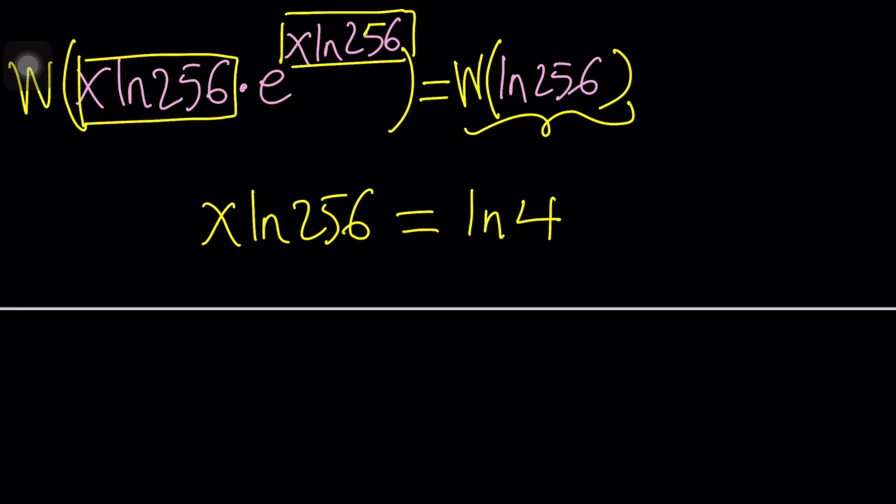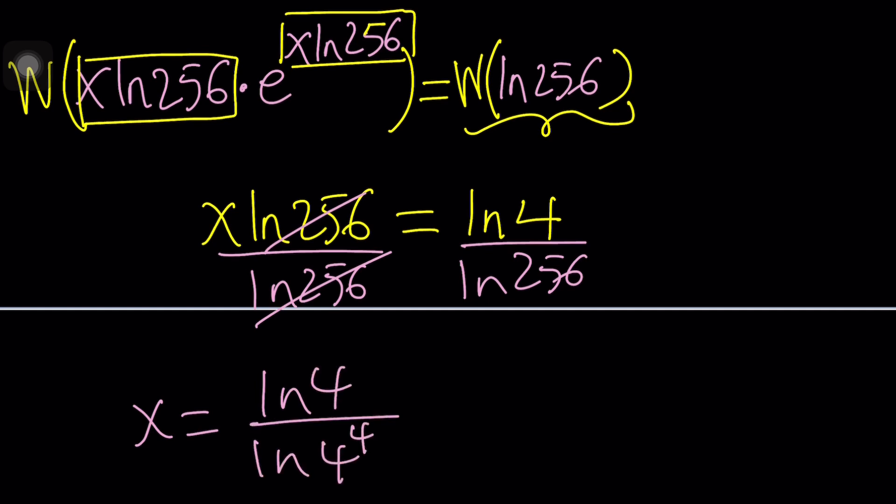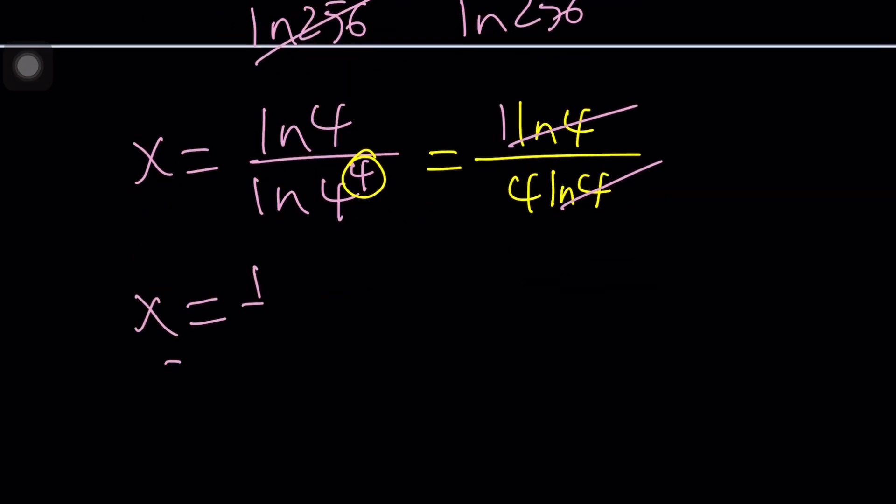Now, we're going to take it from here. To be able to simplify this, what are we supposed to do? Use logarithms. Of course, we can go ahead and divide both sides by ln 256. And then, try to simplify as much as possible. Obviously, we know that 256 is what? 4 to the 4th power, so now we can go ahead and move this to the front. There's a property. 4 ln 4. And then, we can get rid of ln 4 and end up with x equals 1 fourth.